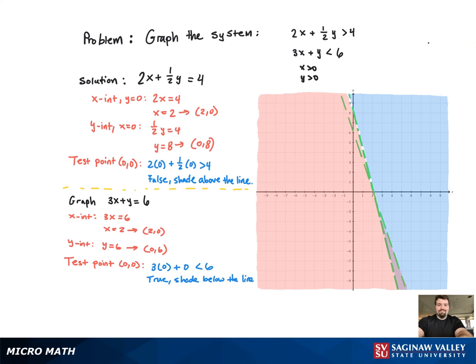That's where (0, 0) is. And you see the overlapping region, the purple region.